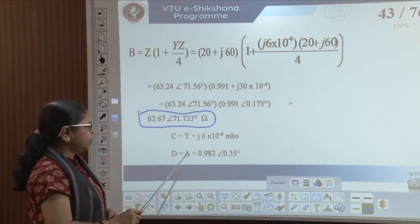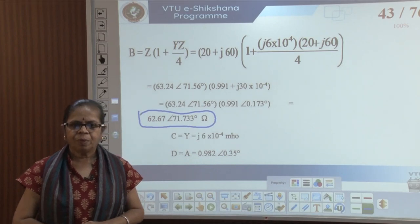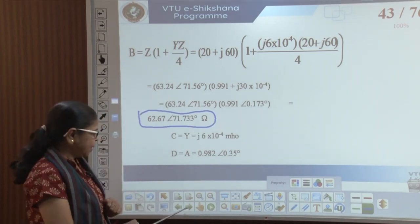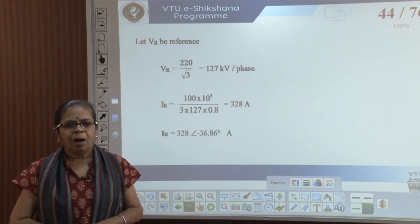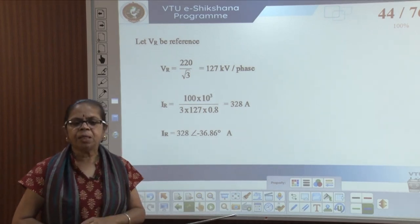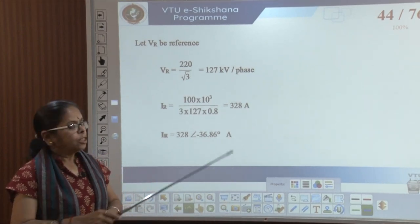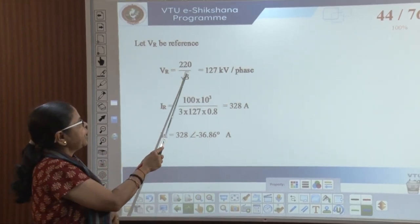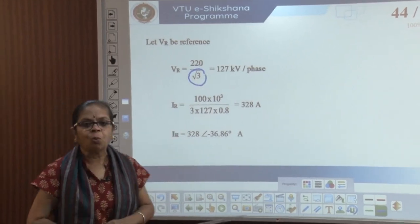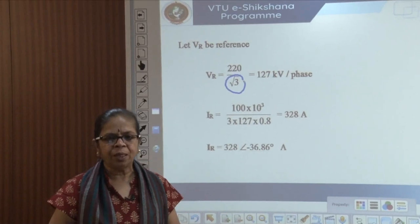C is equal to Y, and D is equal to A. Then I can calculate the sending end parameters once I know A, B, C, D. So Vr is 220/√3, because I need the phase-to-neutral voltage. I divide it by root 3, and there is a factor of 3 because I need the phase power.